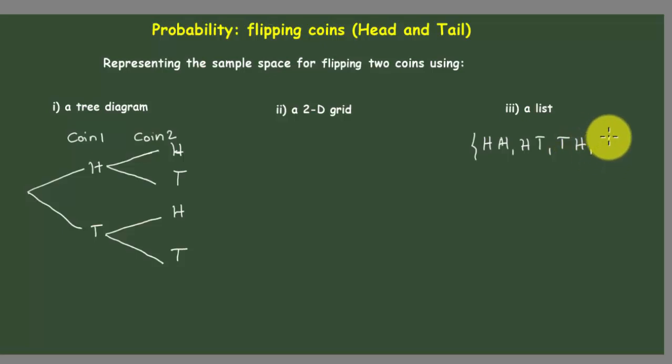For the two-dimensional grid, we can do something like this. We draw a grid—this is for the first coin, coin one, and here coin two.